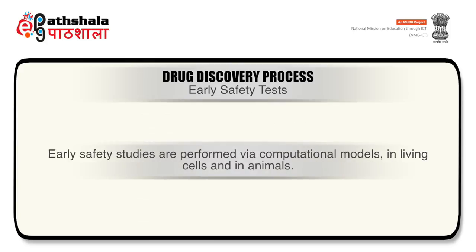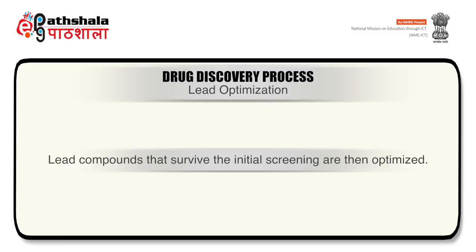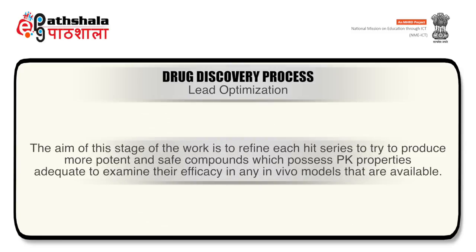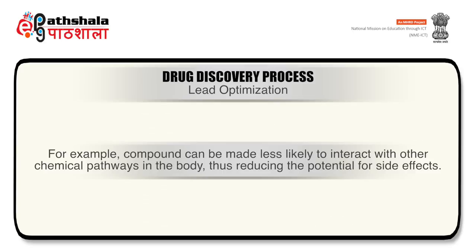Early safety studies are performed via computational models, in living cells, and in animals. After early safety tests, the next step is lead optimization. Lead compounds that survive the initial screening are then optimized. The aim of this stage is to refine each hit series to produce more potent and safe compounds which possess pharmacokinetic properties adequate to examine their efficacy in in vivo models. Properties of the compound can be changed by altering the structure — for example, compounds can be made less likely to interact with other chemical pathways in the body, thus reducing the potential for side effects.